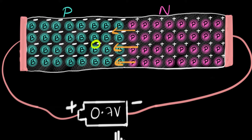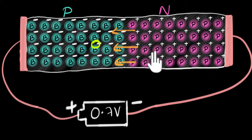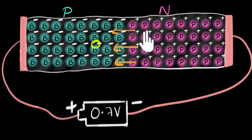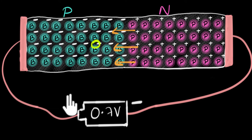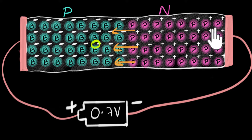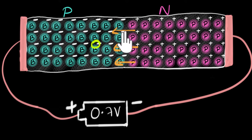The answer is diffusion. Because there are a lot of holes on the P side — a high concentration — but very low concentration of holes on the N side, this difference in concentration makes the holes move from P to N. This process is called diffusion. It's diffusion that's driving the holes across, not the battery pushing them. The same story applies to electrons: high concentration in N, low in P, so electrons diffuse from N to P.